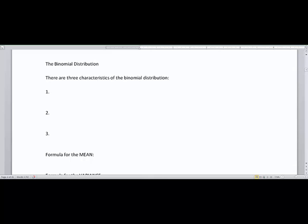So the binomial distribution has some characteristics. The first characteristic is that there's a fixed number of trials, and that's going to be given to you in every problem.